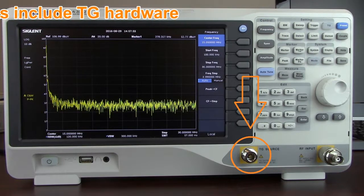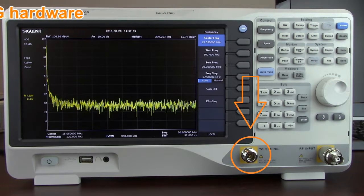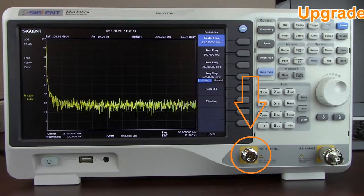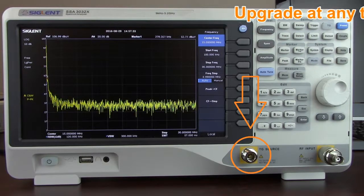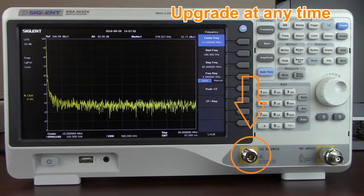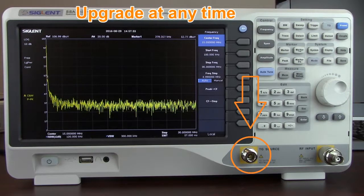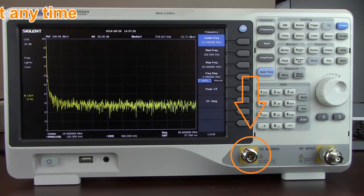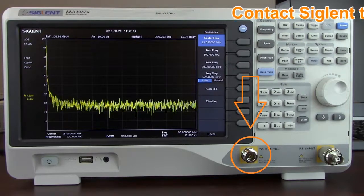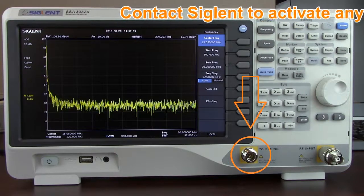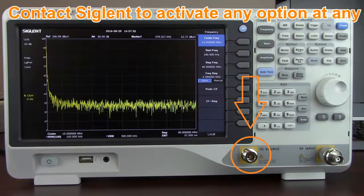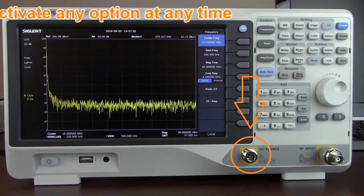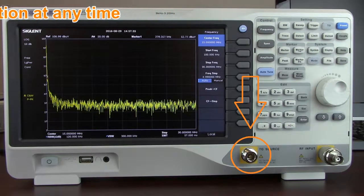To activate the TG option on the Siglent SSA 3000X, all you have to do is call your nearest Siglent office or distributor, purchase the option, and enter the license key. Unlike many analyzers, the TG also operates to the maximum frequency of the instrument, not just to 1 GHz. So if you have a 2.1 GHz unit, the tracking generator operates up to 2.1 GHz. That makes the TG option even more powerful, giving you a full bandwidth capability or full frequency span capability to test your passive and active devices.